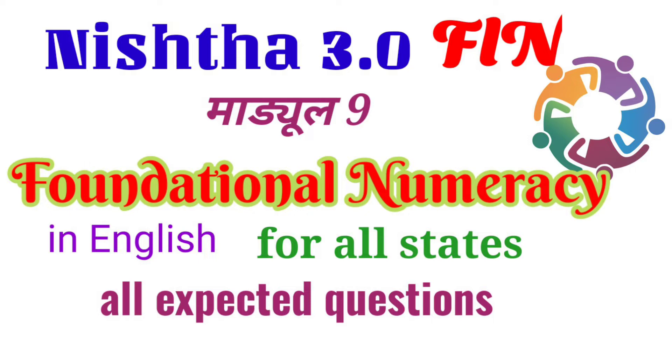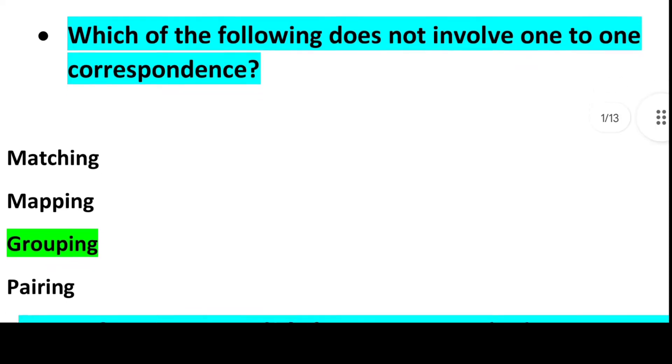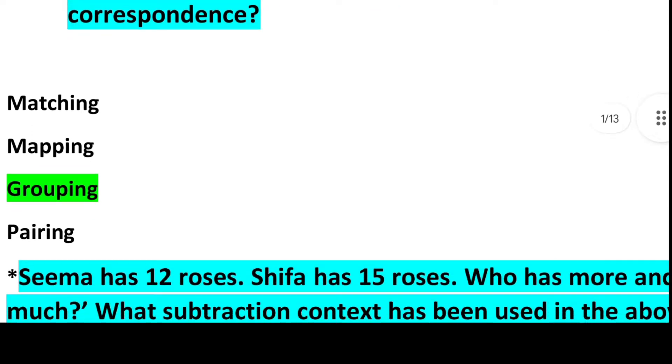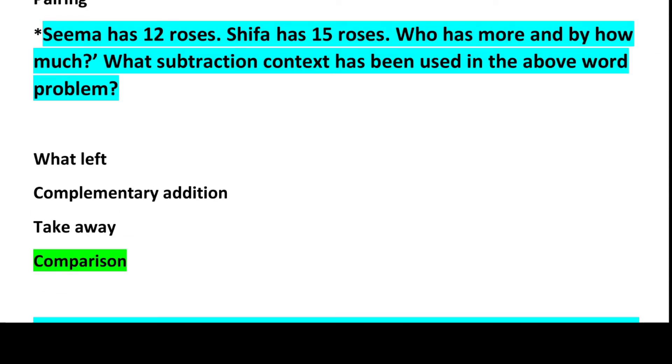Our first question is: Which of the following does not involve one-to-one correspondence? The right answer is Option 3, Grouping. Next question: Sima has 12 roses, Shifa has 15 roses. Who has more and by how much? What subtraction context has been used in the above word problem? Answer is Option 4, Comparison.